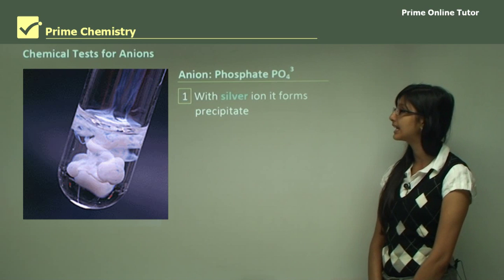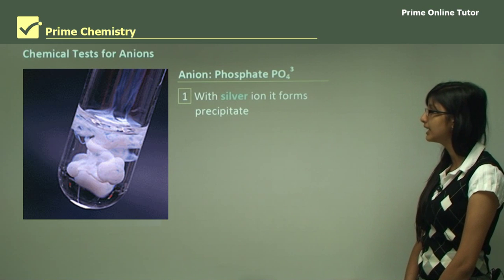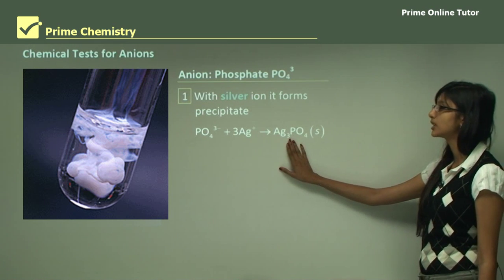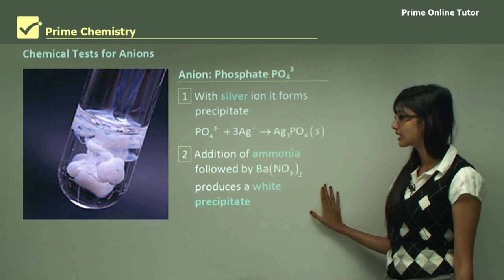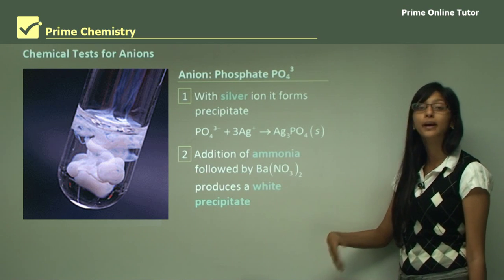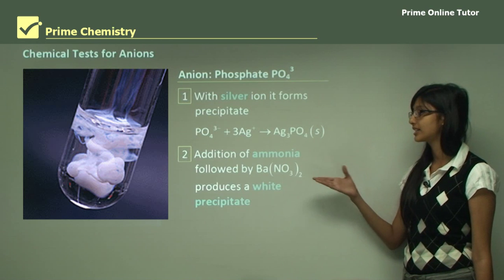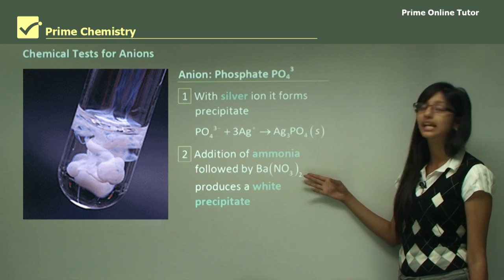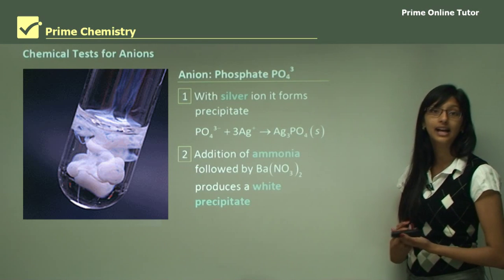Let's first look at the phosphate anion. With silver ions it should produce a precipitate — solid silver phosphate. Addition of ammonia followed by barium nitrate should also produce a white precipitate. So for phosphate, the test is to add either silver ions, forming a white precipitate, or to add barium nitrate to a basic solution, which will also form a white precipitate indicating that phosphate ion is present.